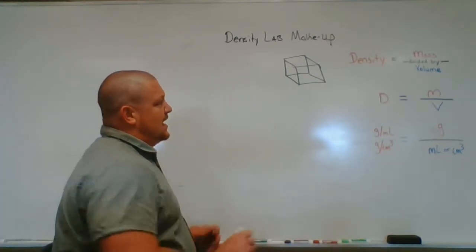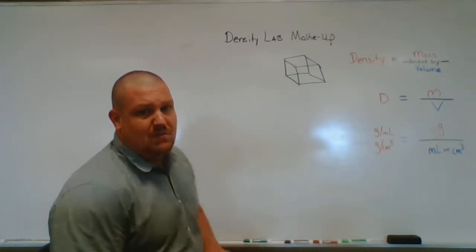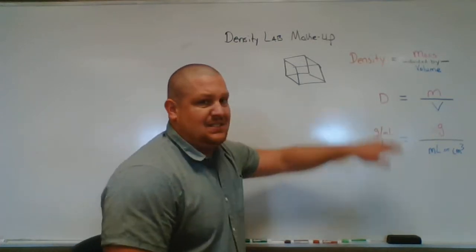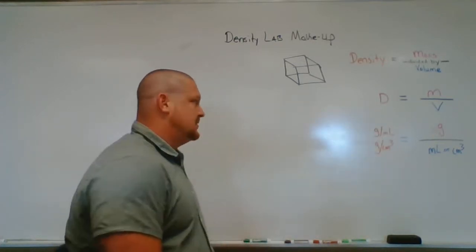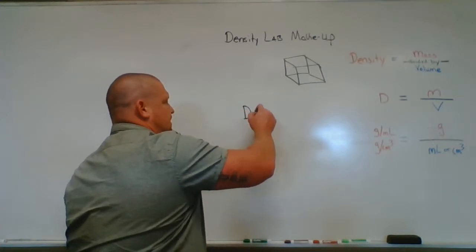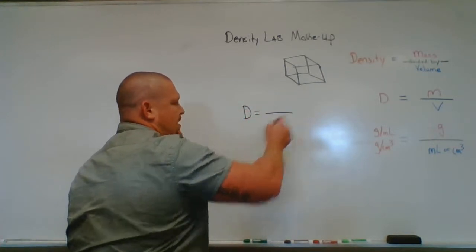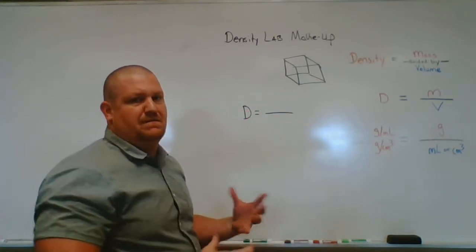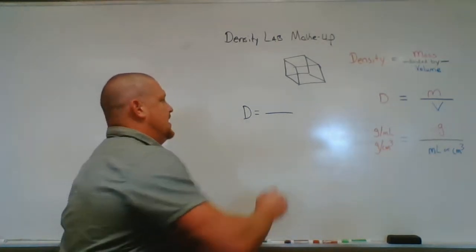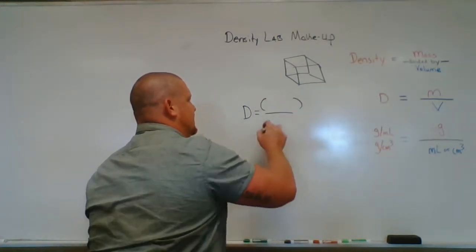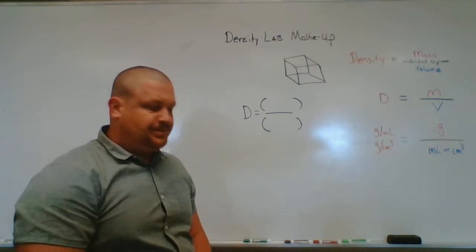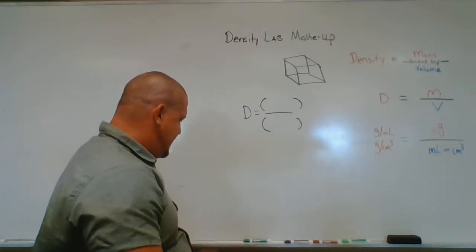To solve for density, density is already the isolated variable — it's already by itself — so I can go ahead and plug in without rearranging the formula. Density equals mass over volume: I need a mass to go on top and a volume to go on the bottom.